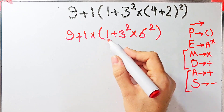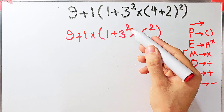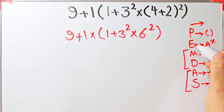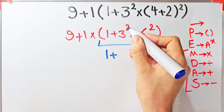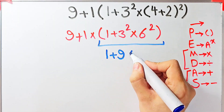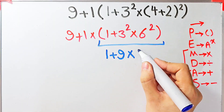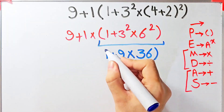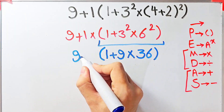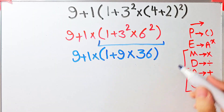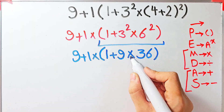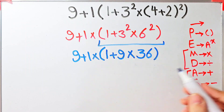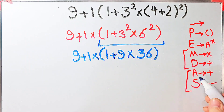Now we have 6 to the power of 2. Inside the parentheses we have addition, multiplication, and exponent. First we simplify the exponent: 3 to the power of 2 equals 9. Now we have 1 plus 9, then times 6 to the power of 2, which equals 36. The question is now 9 plus 1, then times open parentheses 1 plus 9 times 36 close parentheses. Inside the parentheses we have addition and multiplication — first we simplify the multiplication because it has higher priority than addition.